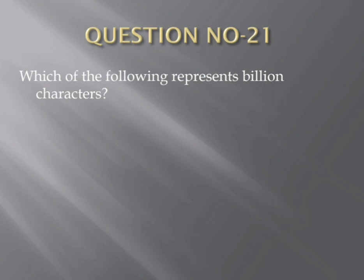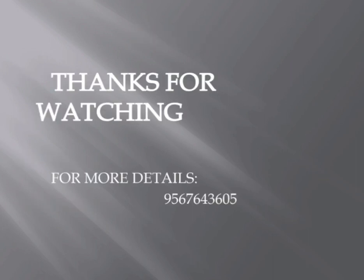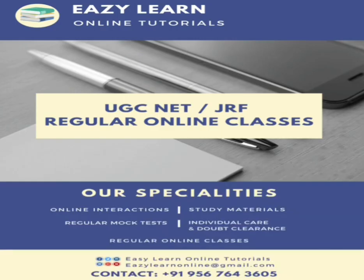Question number twenty-one — last question. Which of the following represents billion characters? Options: (1) Terabytes, (2) Megabytes, (3) Kilobytes, (4) Gigabytes. The correct answer is the fourth one — Gigabytes. Thanks for watching. For more details please contact 9567643605. EasyLearn Online Tutorial — UGC NET/JRF regular online classes. Our specialties: online interactions, study materials, regular mock tests, individual care and doubt clearance.